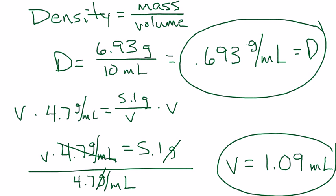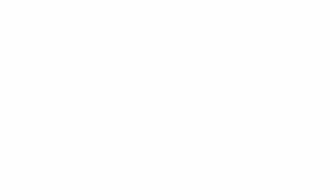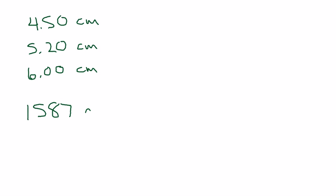All right, I'll leave you to do the third one, C, there on your own. For 7, let me go ahead and erase some stuff here. For 7, we get a block of lead that has dimensions of 4.50 centimeters by 5.20 centimeters by 6.00 centimeters. And the block weighs 1,587 grams. From this information, calculate the density of lead. Now, I'm going to go ahead and draw a cube here, or try to.